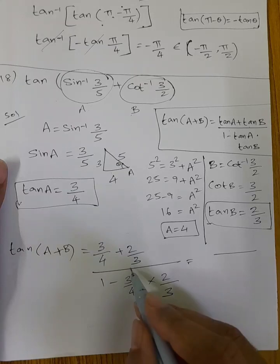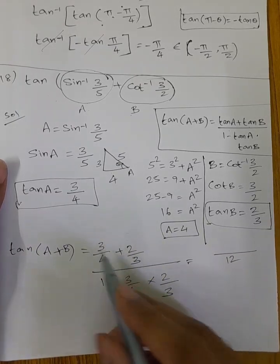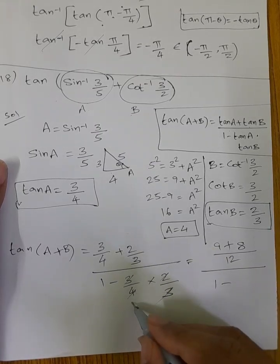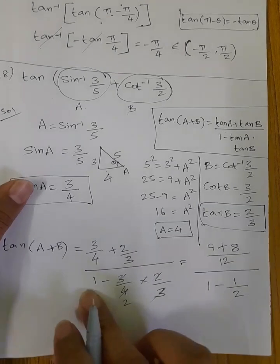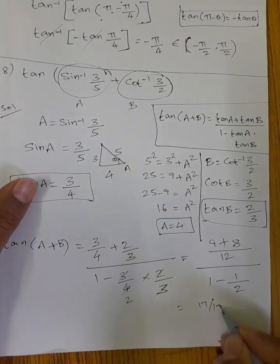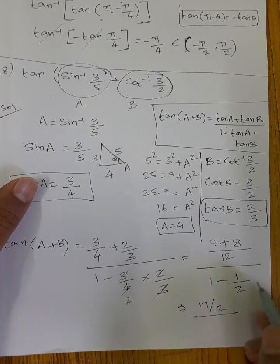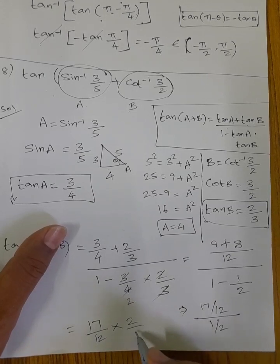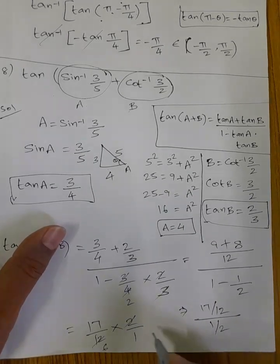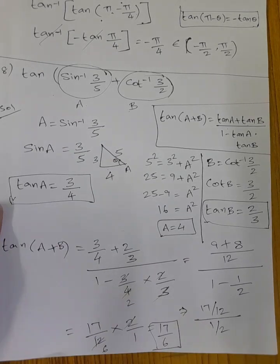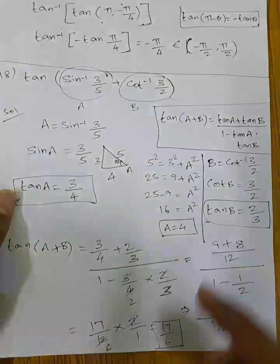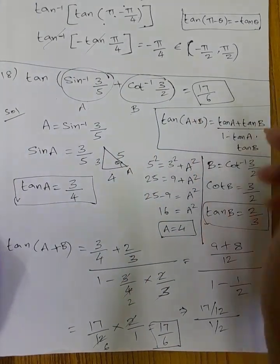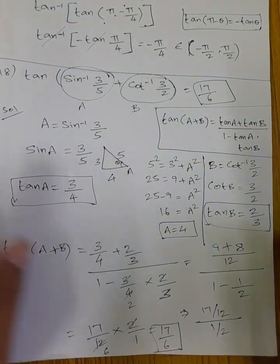Computing the numerator: 3/4 + 2/3, LCM is 12, giving 9/12 + 8/12 = 17/12. For the denominator: 1 minus (3/4 × 2/3) = 1 minus 1/2 = 1/2. So the answer is (17/12) divided by (1/2) = 17/12 × 2/1 = 17/6. So tan of [sin inverse(3/5) + cot inverse(3/2)] = 17/6.